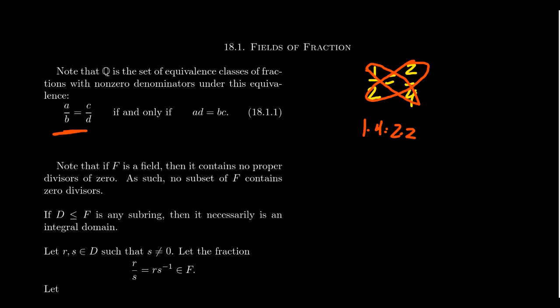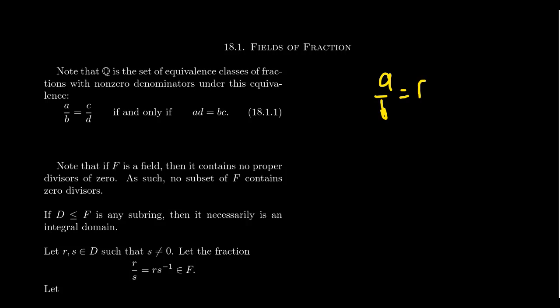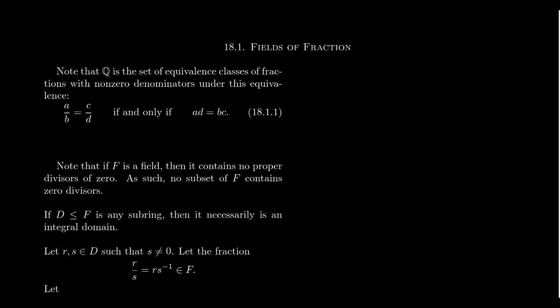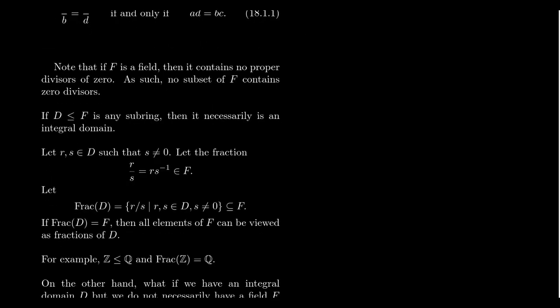So the rational numbers form an equivalence relation on the set of fractions where the denominator is never allowed to be zero. In that set of acceptable fractions, including improper ones, we define an equivalence relation where we consider those with equal cross-products the same. When we write a fraction A/B, we mean the equivalence class of the ordered pair (A, B), though other ordered pairs can be considered the same thing. I want to generalize this construction to the setting of an integral domain.